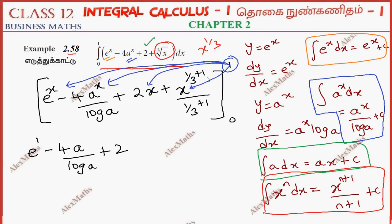So substitute, 1 power anything is 1. Plus 1 input, it is 1 by 3 plus 1, 4 by 3, and 4 by 3 is the upper limit.